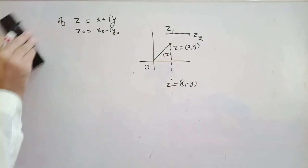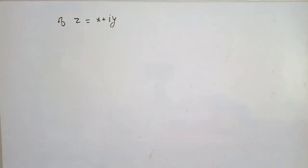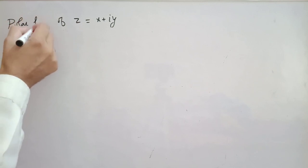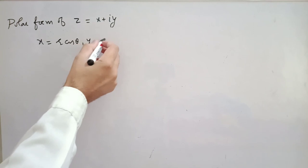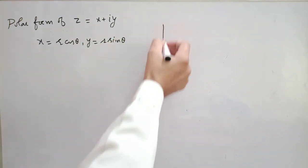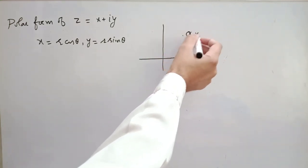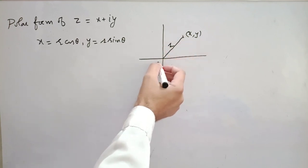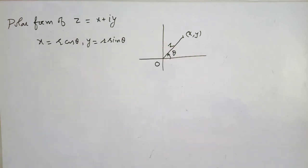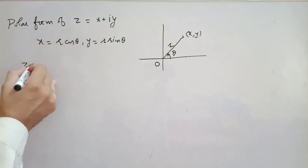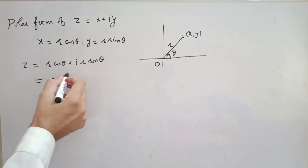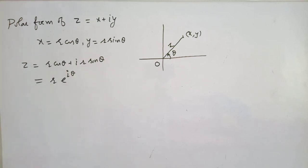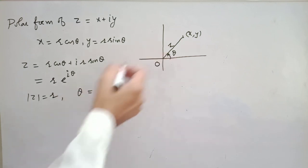Next is the polar form of z. In the polar coordinate system, x = r cos θ and y = r sin θ. Here r is the distance from the pole and θ is the angle. So in polar form, z = r cos θ + i r sin θ, and in Euler notation, z = re^(iθ). Clearly |z| = r, and θ is called the argument of z.